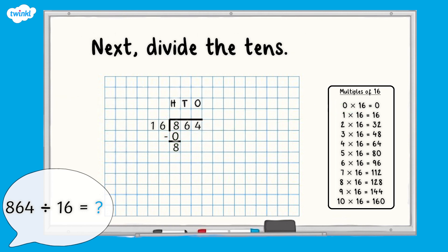Next divide the tens. Don't forget to include the tens from the dividend. Pause here and complete this step. 86 tens divided by 16 equals 5 tens remainder 6 tens. Did you complete this step correctly?